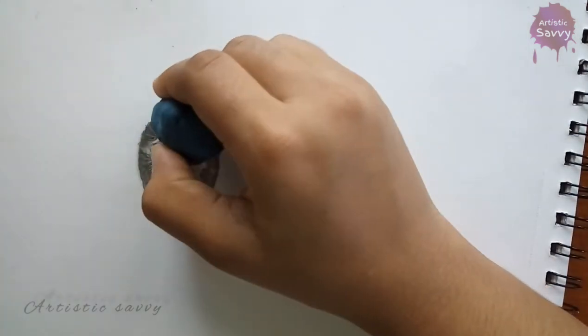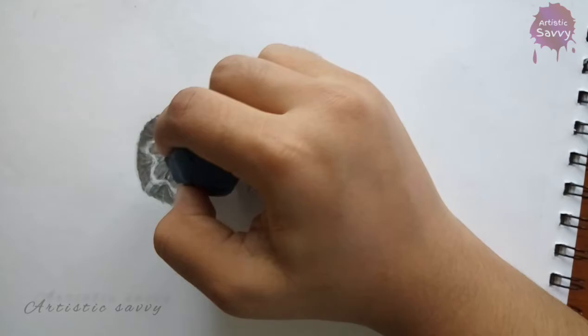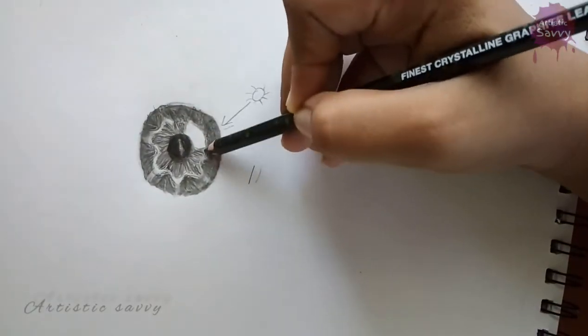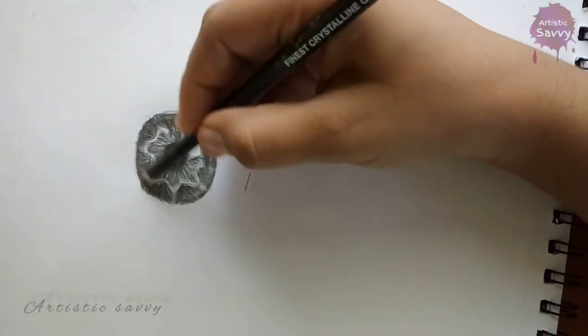Now I need the shadow of the upper lid to be much darker, so I'm shading that.